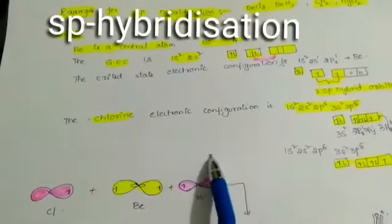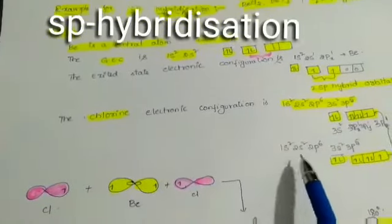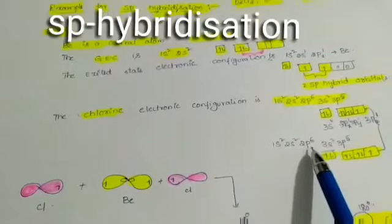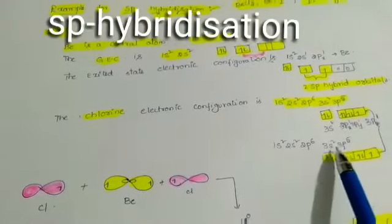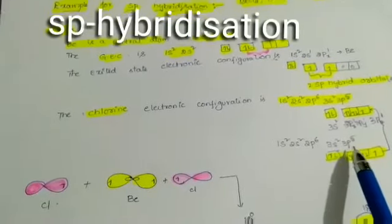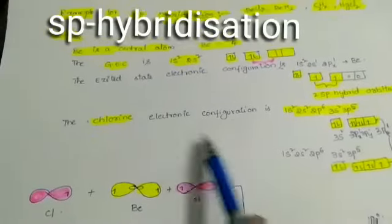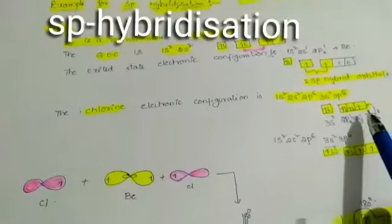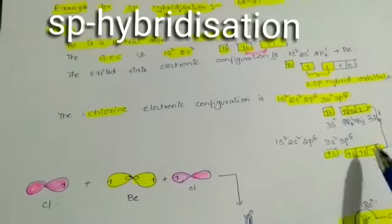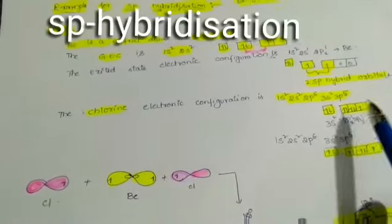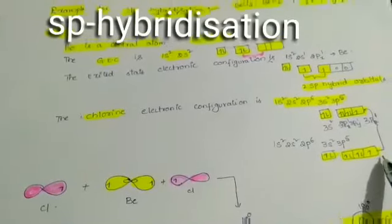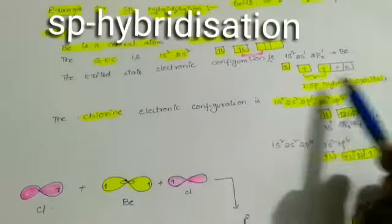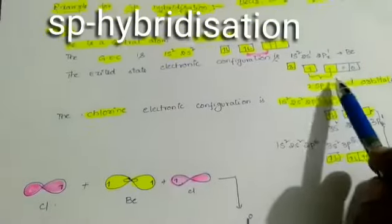The second chlorine atom also has the electronic configuration 1s², 2s², 2p⁶, 3s², 3p⁵. Each chlorine atom has 1 unpaired electron. These 2 electrons from the two chlorine atoms are combined with the SP hybrid orbitals, which also have 2 electrons.